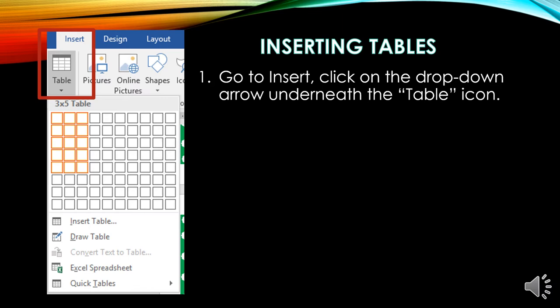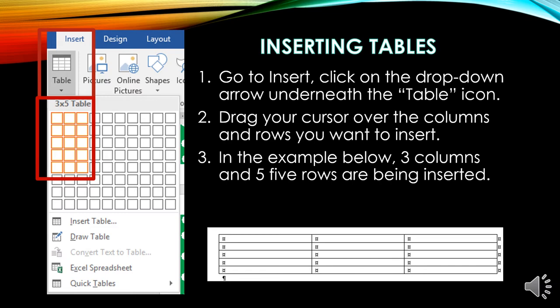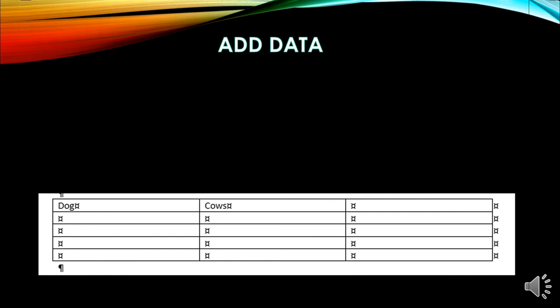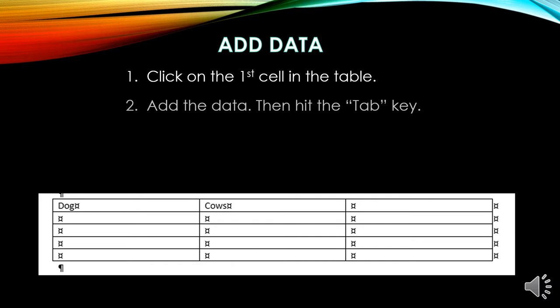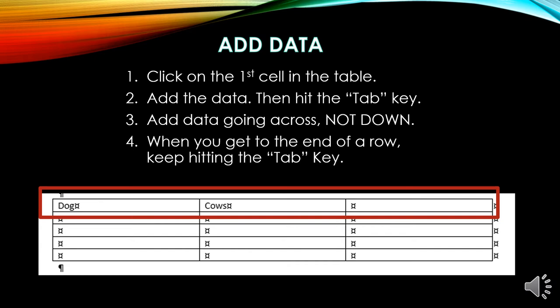Inserting a table. Go to Insert and click on the drop-down arrow underneath the table icon. Drag your cursor over the columns and rows you want — in the example, three columns and five rows were inserted. To add data, click on the first cell, add the data, then hit the tab key. Add data going across, not down. When you get to the end of a row, keep hitting the tab key.